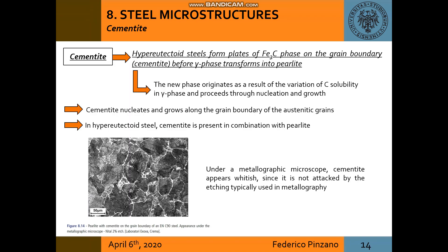Cementite: hyper-eutectoid steels form plates of iron carbide phase on the grain boundaries of austenitic grains — cementite — before the gamma phase transforms into pearlite, and the new phase proceeds through nucleation and growth. Also in this case, cementite is present in combination with pearlite.